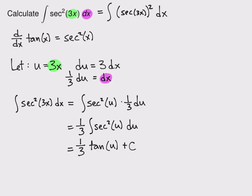But I started with x's, so I'm going to have to end with x's. So I'm ending with 1 third tangent, and u is the same thing as 3x plus an unknown constant. And there is my general antiderivative for secant squared 3x with respect to x.